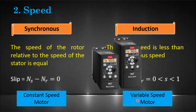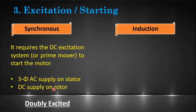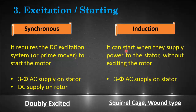The third difference is based on the excitation or starting method. The synchronous motor requires a DC excitation system or a prime mover to start. Two different supplies are needed: a three-phase AC supply on the stator and a DC supply on the rotor, which is why it is called a doubly excited motor. The induction motor can easily start with only a three-phase AC supply on the stator, without exciting the rotor. There are two types of rotor: squirrel cage and wound type.